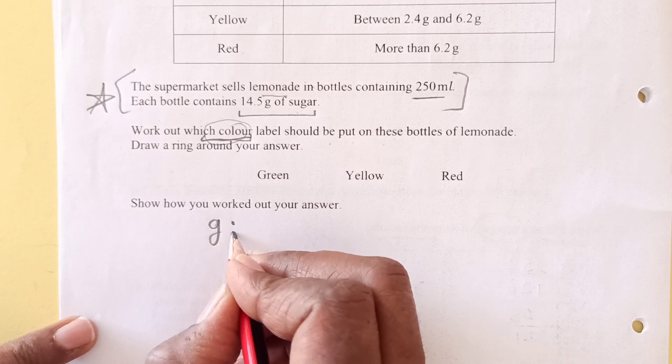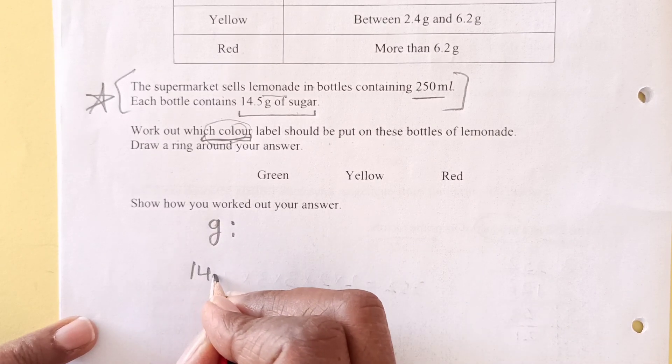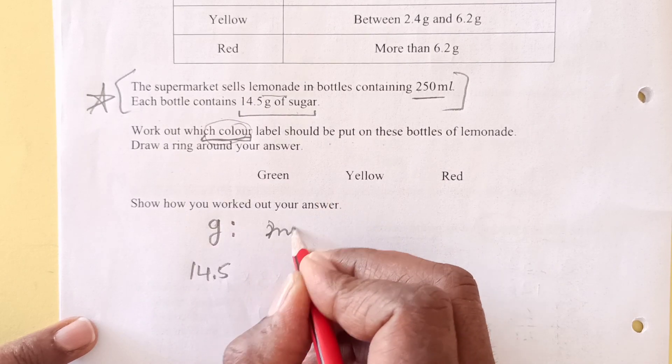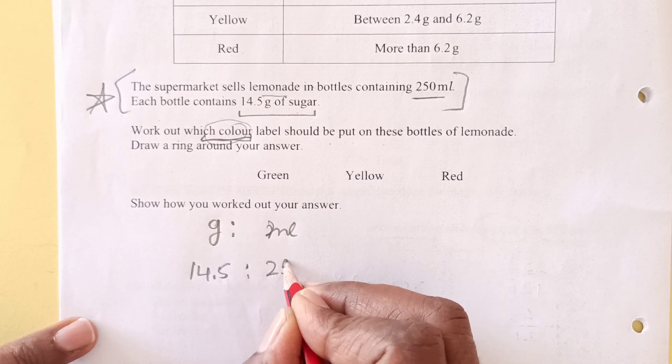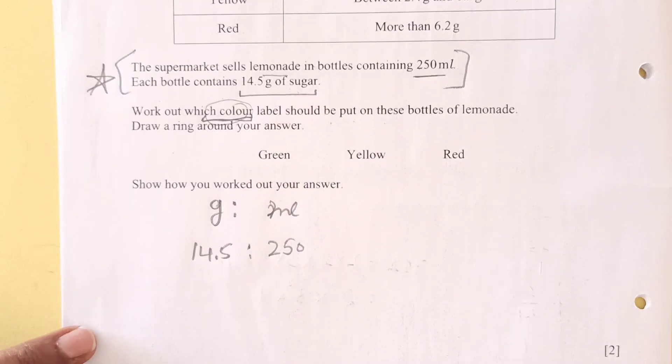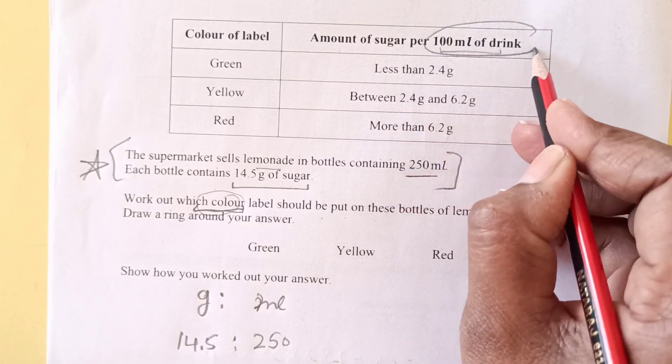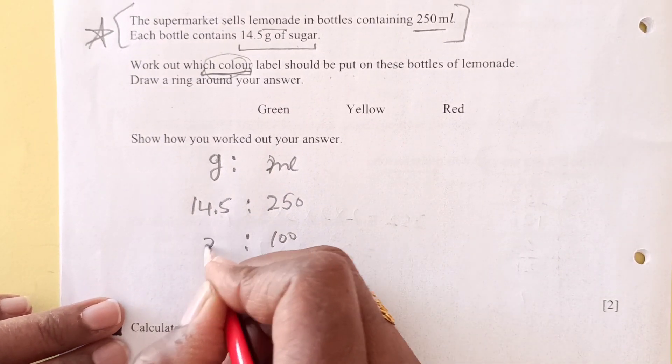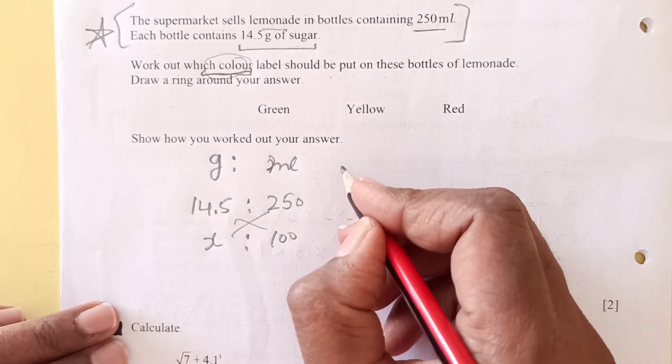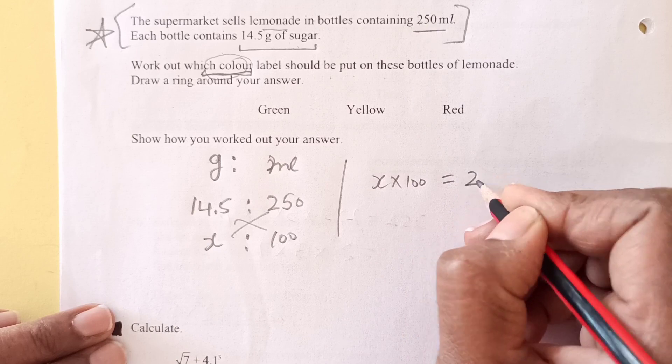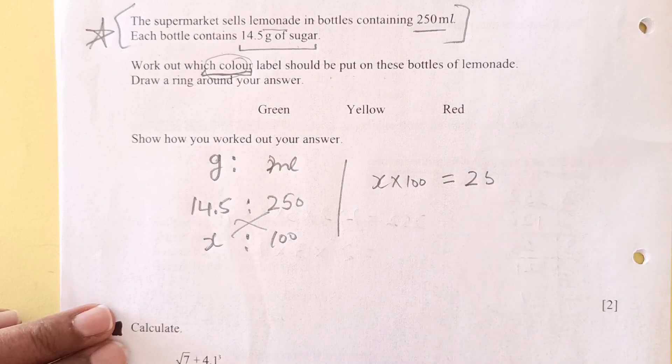So now, as we are given, this is our question here. The main thing is 14.5 grams of sugar is in 250 milliliters of the bottle of lemonade. We are looking for the 100 ml, so for 100 ml, how much sugar will be there? So we are going to cross multiply. X times 250 equals to 14.5 times 100.